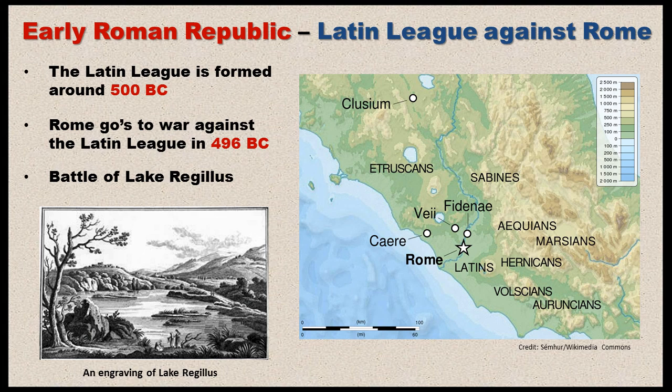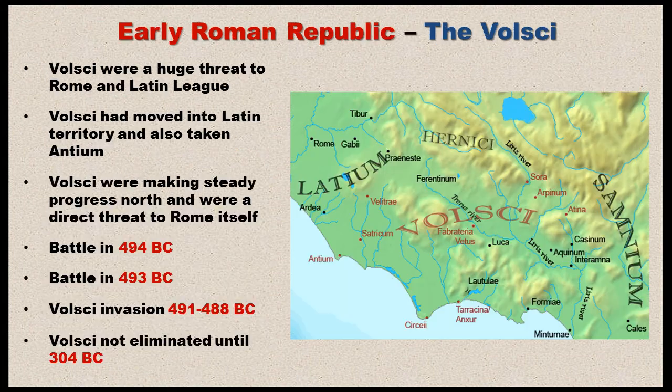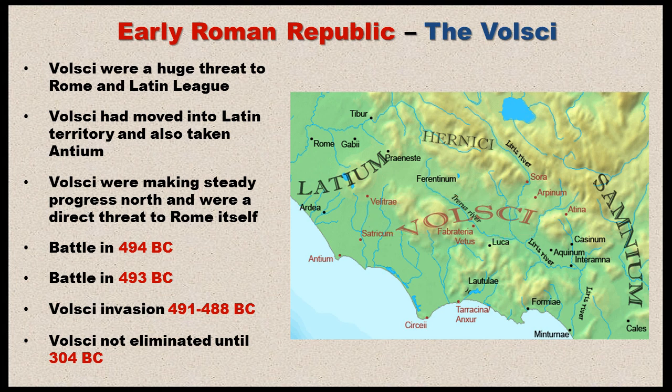Even though the alliance was now formed, they still faced extreme threats from all the non-Latin tribes — specifically the Volscians and the Aquians. The Volsci were very close to Latin territory, just southeast of Rome and Latium, and were starting to move into Latin territory and began to threaten Rome itself.